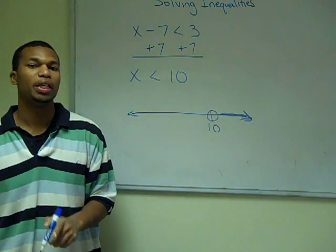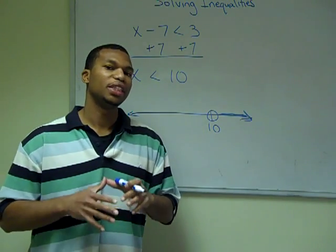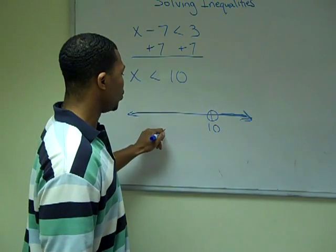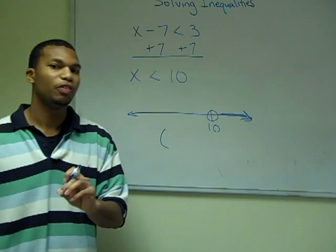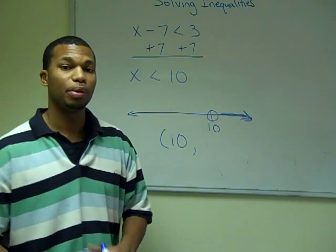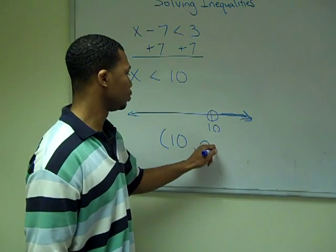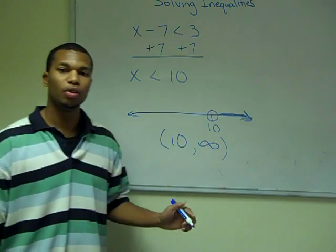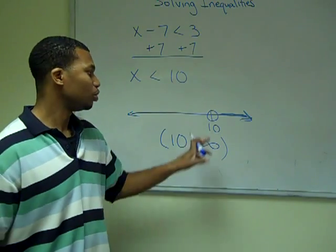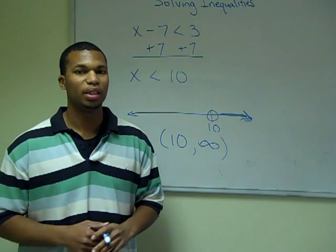Notice I use the open dot because 10 cannot be part of the solution. If we want to write this in set notation, we use a parenthesis and include the lowest value, which is 10, comma, and the highest value, which is positive infinity. The parenthesis indicates an open dot, meaning 10 cannot be in the solution.